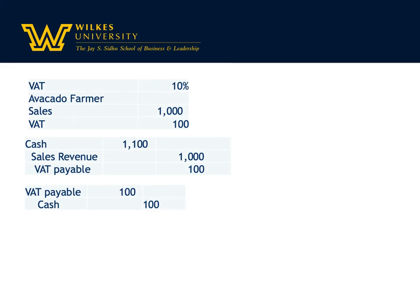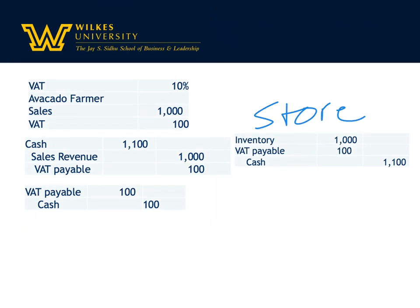The difference comes if you're in the middle of the chain or the end of the chain, and that would be what happens to the grocery store. When the grocery store purchases the avocados, it debits inventory for $1,000. It also debits VAT payable for $100, because it's kind of setting up a contra asset, so to speak, and credits cash for $1,100. It's prepaying the VAT tax.